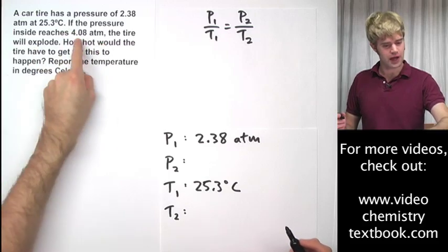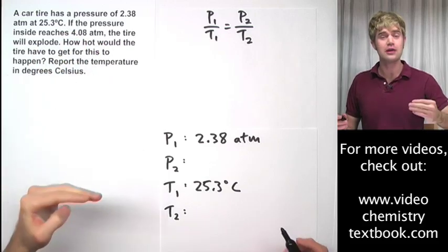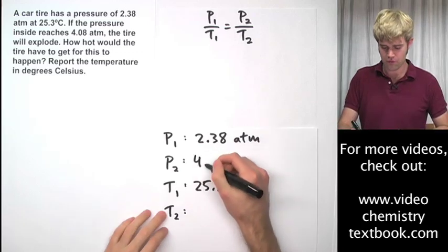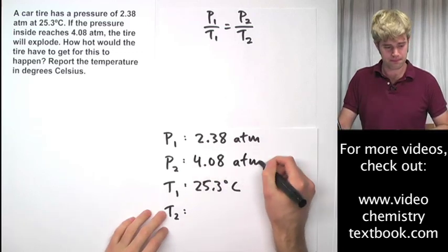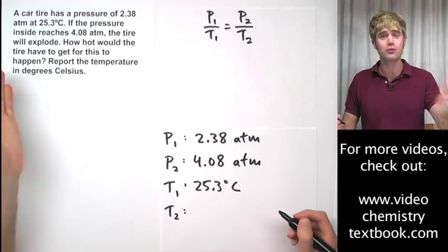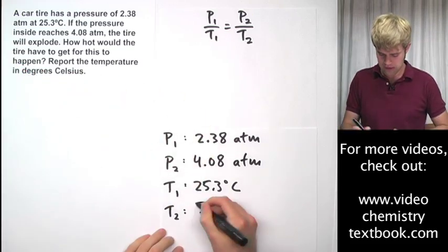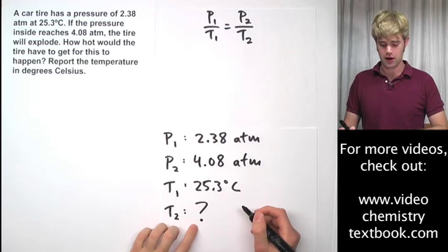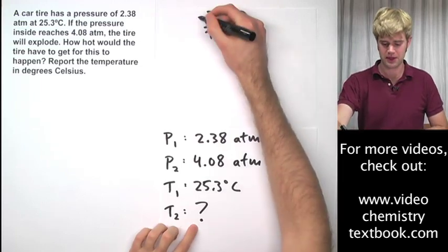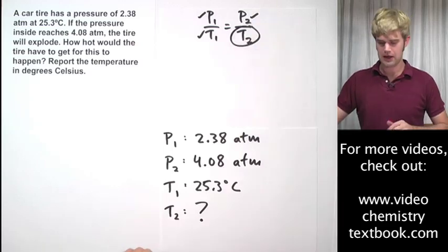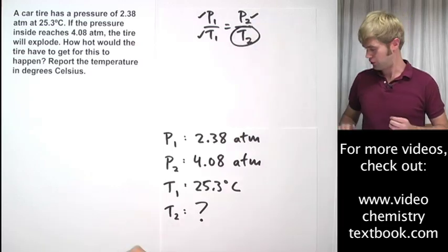Now, if the pressure inside reaches 4.08, so that's where the pressure is going to be after the change, there's our P2, 4.08 ATM, what's the temperature going to be? How hot would it have to be for the pressure to get that high? So T2 is going to be the variable we're going to solve for. So we know P1, we know P2, we know T1, and T2 is going to be the variable that we're solving for.